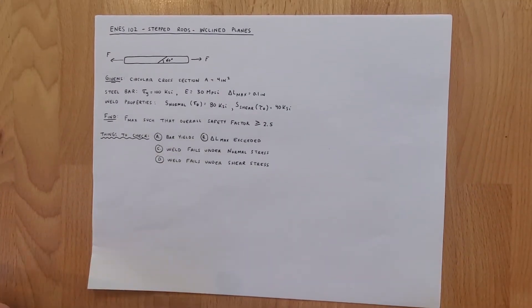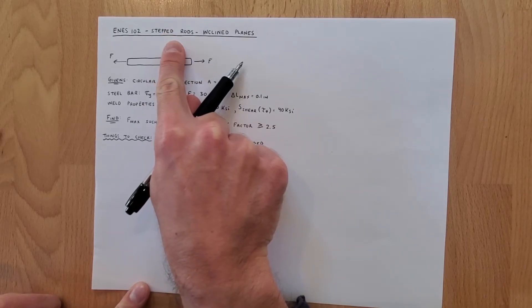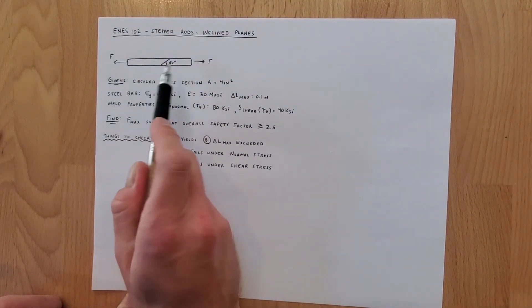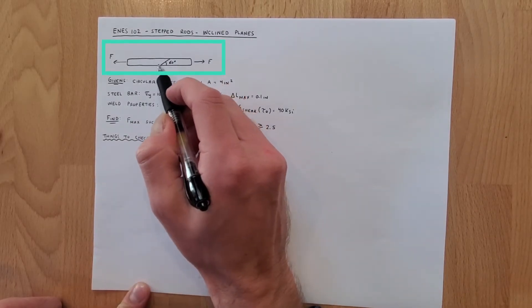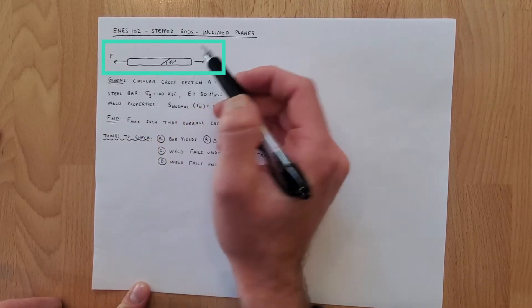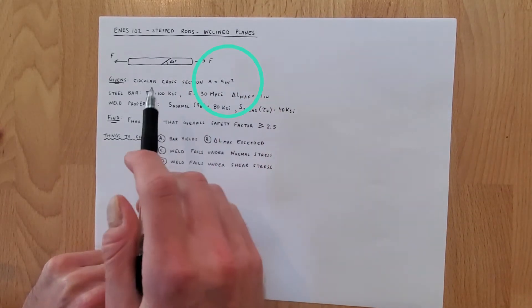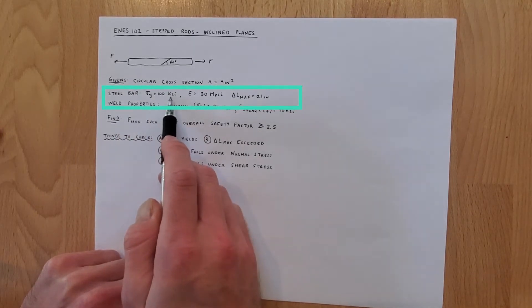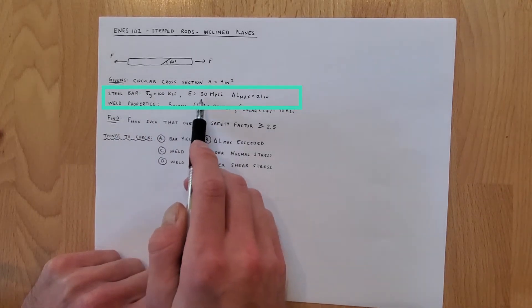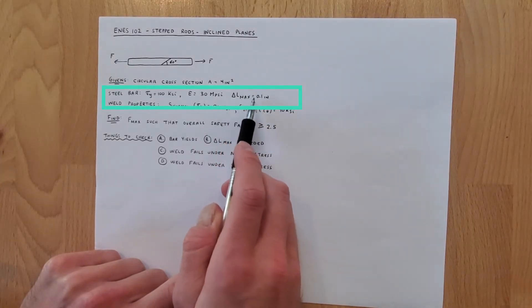Let's take a look at this inclined plane problem. So what we can see is we've got a bar, we've got a force on either side, we've got an angle of 60 degrees relative to the horizontal side of our beam, we're told we have a circular cross section of four inches squared, we're told it's a steel bar with a yield stress of 100 ksi, a Young's modulus of 30 mega psi and a maximum change in length allowable of 0.1 inch.